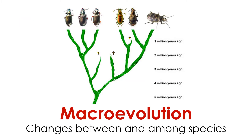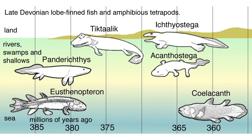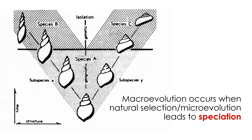The higher level of evolution is called macroevolution — evolution among and between species. It is the sum of many microevolutionary changes over geologic time that leads to the evolution of new species, genera, families, orders, and other taxa. Macroevolution deals with the origin of new types of life over the last 4 billion years, and occurs when microevolution leads to speciation, or the origin of new species.